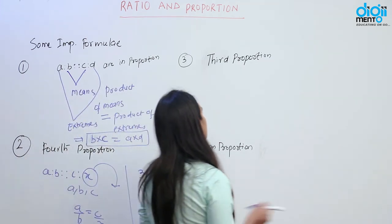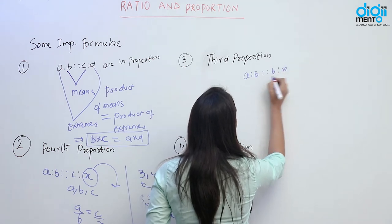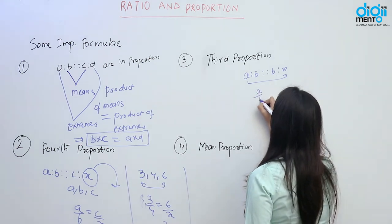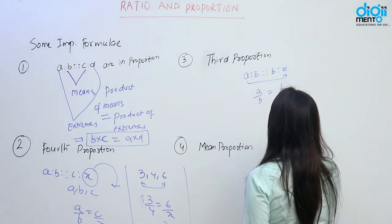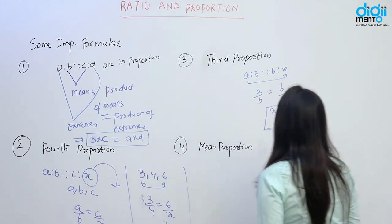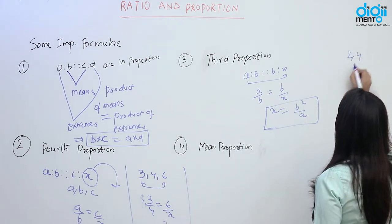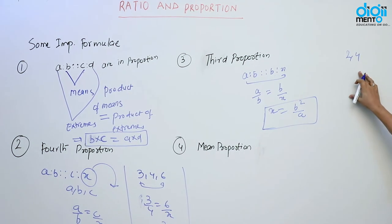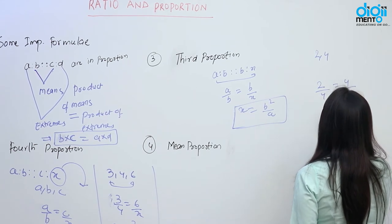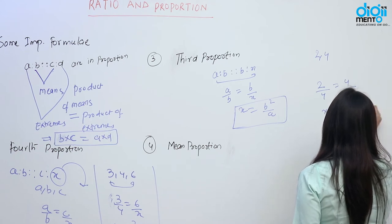The next term is third proportion. X is called the third proportion of A and B if A by B is equal to B by X, or you can say X is equal to B squared by A. Suppose we have 2 and 4, and we have to find the third proportion of 2 and 4. X must be equal to 4 into 4 over 2, that is equal to 8.